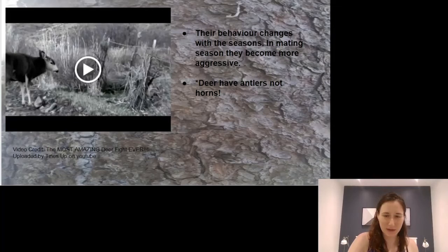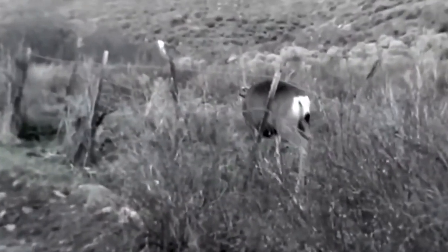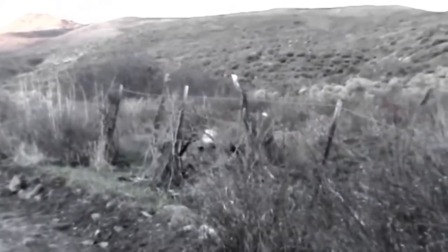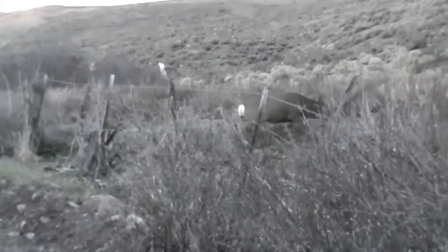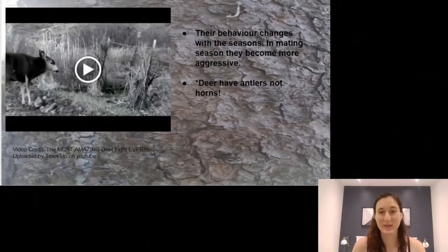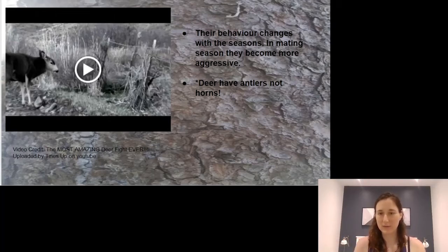Now I've got a really neat video for you about deer. Look at that — a buck without horns. Deer behavior changes a lot with the seasons, and in mating season they become way more aggressive. Also important to note: deer have antlers, not horns. We're not sure what happened to this male deer and why it doesn't have antlers.